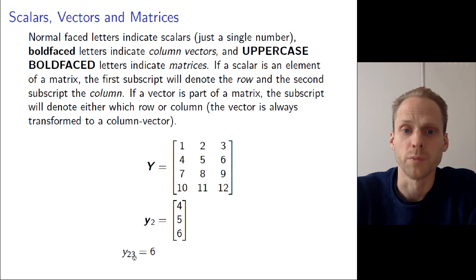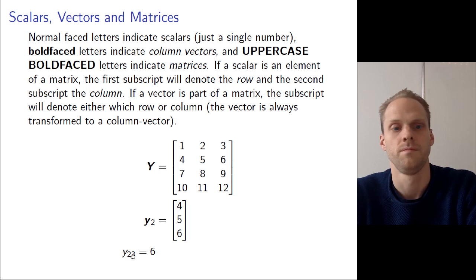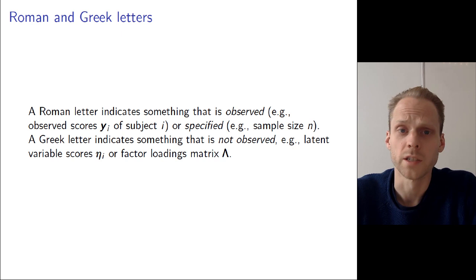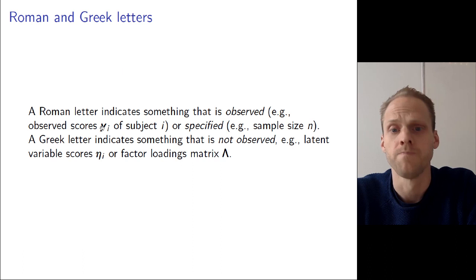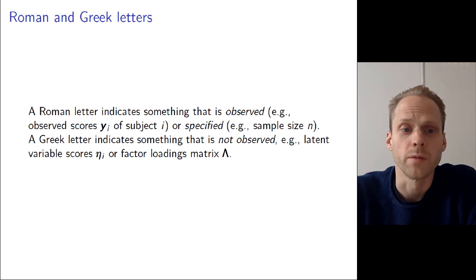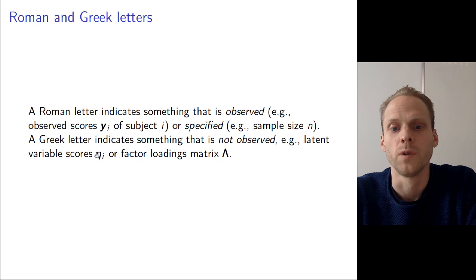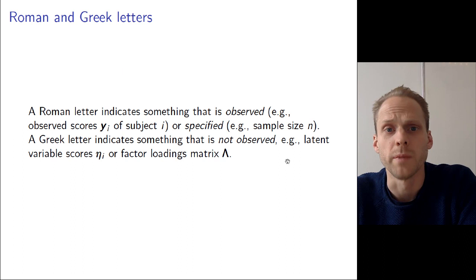We will see this a lot in structural equation modeling. It is useful to have this notation correct so you can really see what you're doing and where you're getting your elements from. In general I will use Roman letters and Greek letters, which is common in statistics. I will use a Roman letter to mean something that's observed — so Y indicates the data or observed scores. A Greek letter on the other hand will indicate something that is not observed or something that we don't necessarily know, such as eta for latent variable scores or lambda for the factor loadings matrix. In general these Greek letters will either be latent variables or parameters.